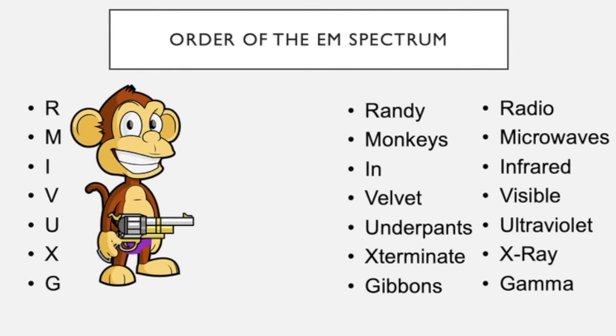Now if you don't like my mnemonic to remember the order of the electromagnetic spectrum you can always come up with your own. The more memorable the better. So if you can make it weird and wonderful then your brain will remember it even better.